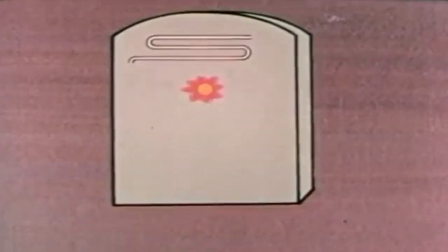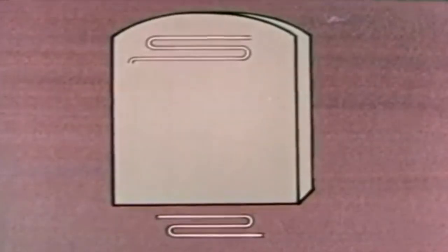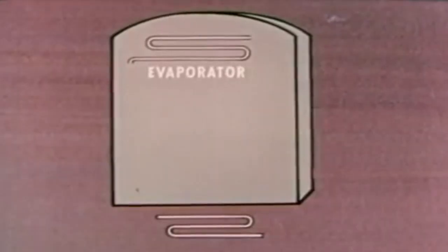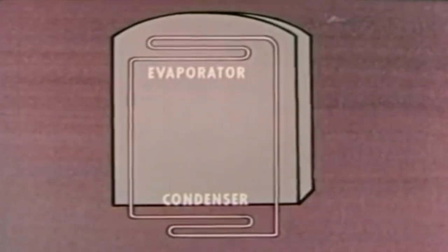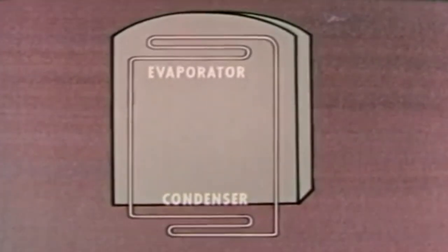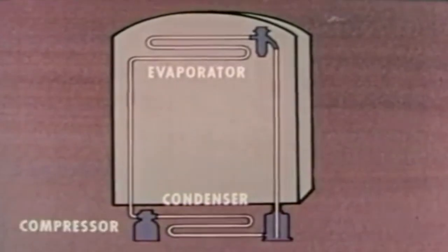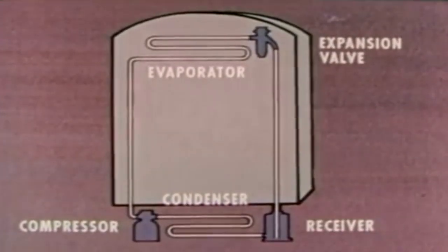Refrigeration is the transfer of heat from a place where it is not wanted to a place where it is unobjectionable. To do this, a refrigerator uses a unit inside the box that takes up heat and a unit outside the box that gets rid of it. These units are called the evaporator and the condenser. They are tied together by connecting lines referred to as the suction line and the liquid line. Also in the system are the compressor, which is a pump, the expansion valve, and in many systems the receiver, a kind of storage tank.